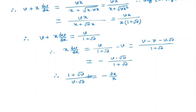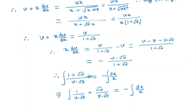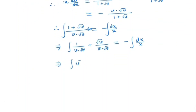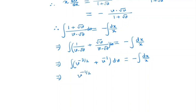We can now integrate both sides. Simplifying (1 plus root v) divided by (v times root v) gives 1 divided by (v times root v) plus root v divided by (v times root v), which becomes v to the power negative 3/2 plus v to the power negative 1/2. Integrating, we get v to the power negative 1/2 divided by negative 1/2 plus ln v equals negative ln x plus c.